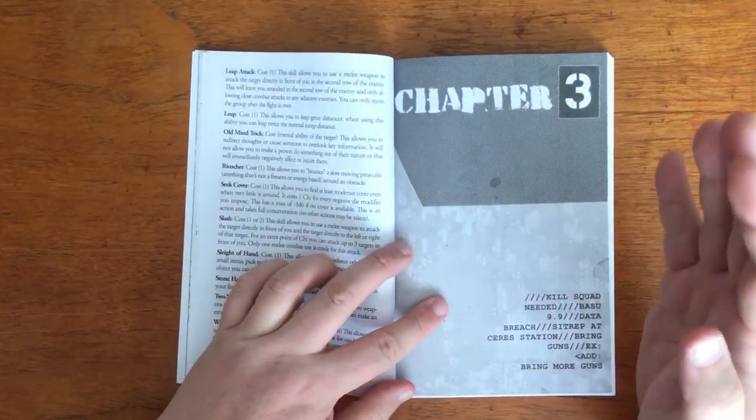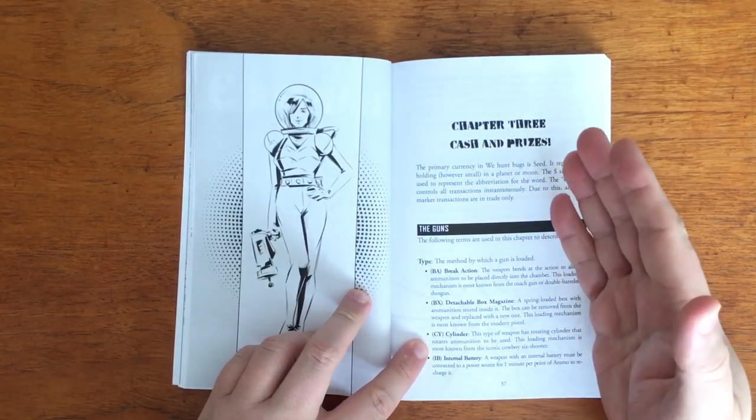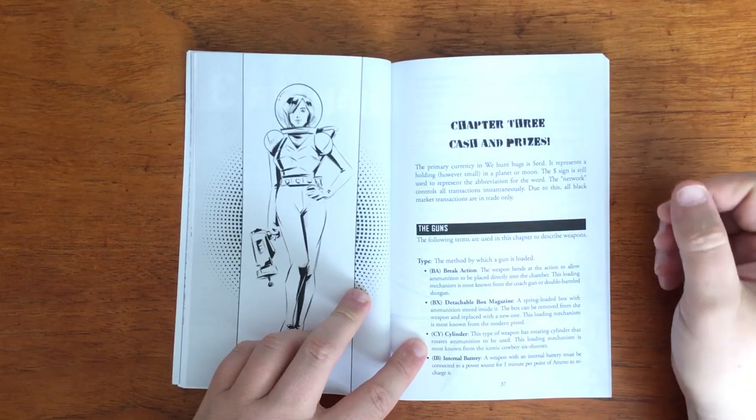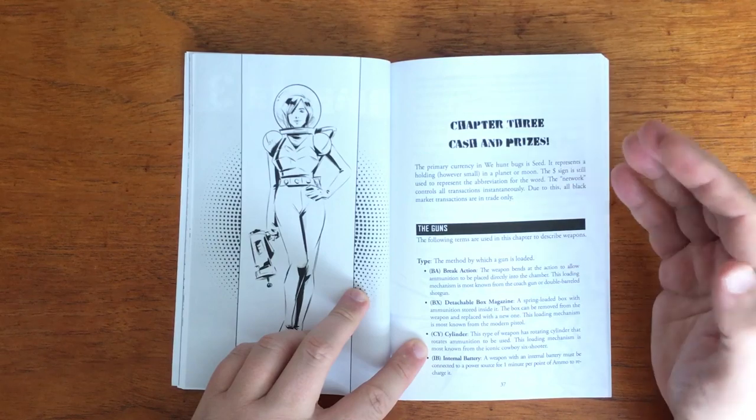Right, we then move onto Chapter 3, Cash and Prizes. The currency in the We Hunt Bugs universe is SEED. This is symbolised by a dollar sign. It represents a holding on a planet or moon. All transactions are electronic and instantaneous, so all black market trades are goods only.